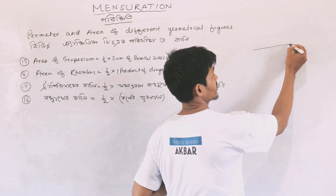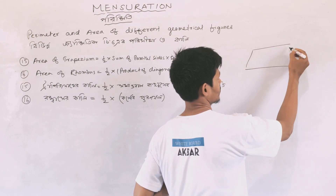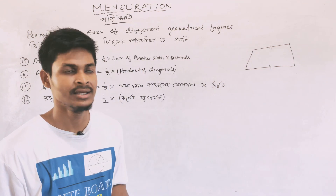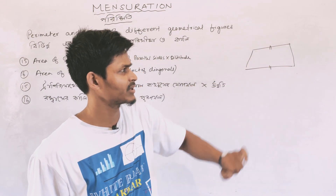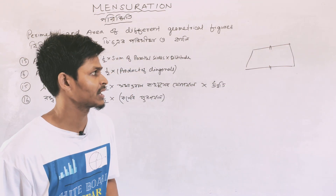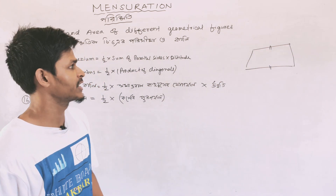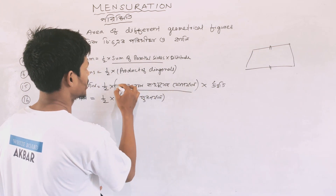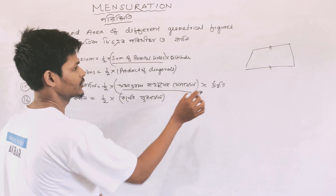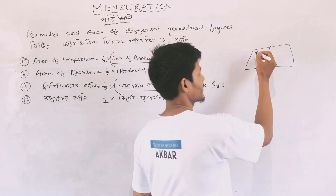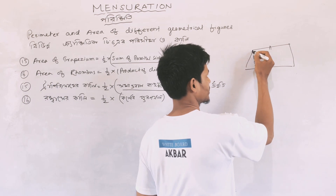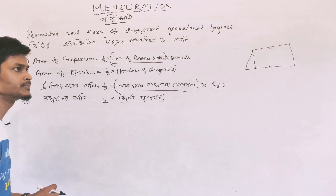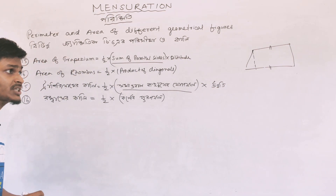For the trapezium, in its diagram two sides are parallel. These two sides are parallel to each other. We take the sum of these two parallel sides, multiply by the altitude (height), and then multiply by half to get the area.